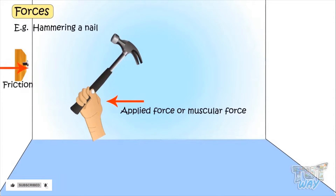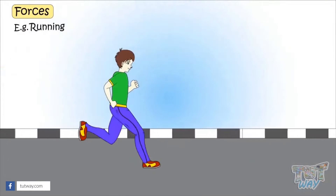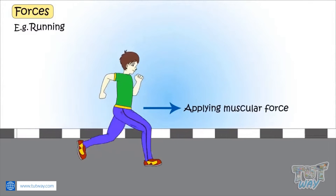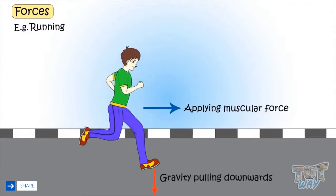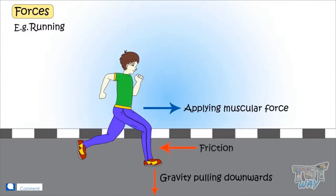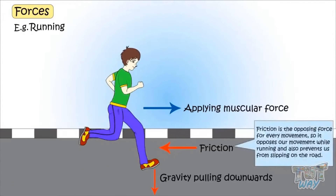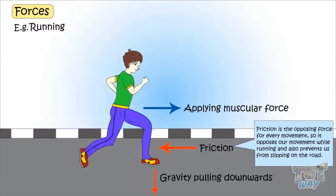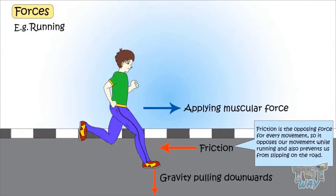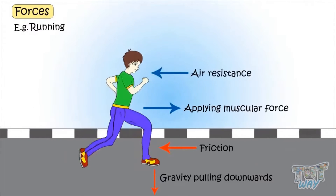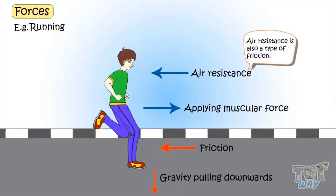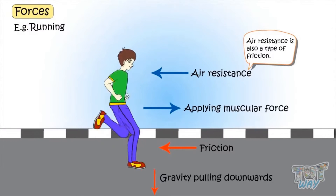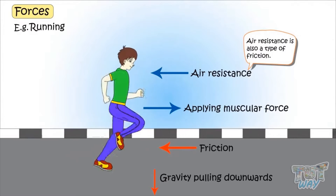Now let's see forces acting while we are running. We apply muscular force to move forward. Gravity is pulling us downwards. Friction, as we know, is the opposing force for any movement — it opposes our movement and also prevents us from slipping on the road. Air resistance is also a type of friction posed by the air that prevents movement and decreases the speed of the moving object.